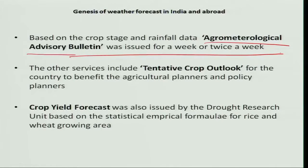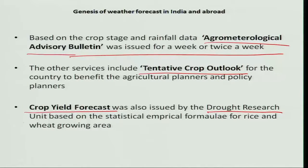Another bulletin called the Tentative Crop Outlook provides information on the crop stage in the country and is issued to crop planners, agriculture planners, and policy planners to know the status of the agriculture situation in India. The crop yield forecast was also issued by the Drought Research Unit of IMD based on statistical empirical formulae for rice and wheat growing areas.